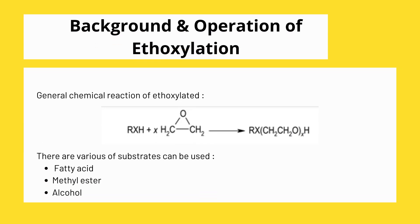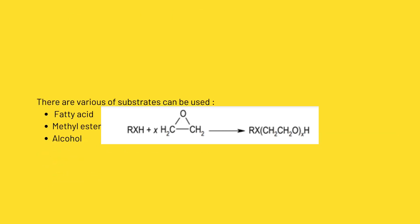Below is the general chemical reaction for ethoxylates. RxH is a fatty acid reacting with x(C2H4O), ethylene oxide, and produces ethoxylates in the presence of alkaline catalysts. A variety of substrates can be used to produce ethoxylates — for example, fatty acid, methyl ester, and alcohol, depending on the usage.